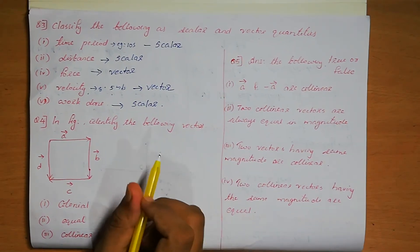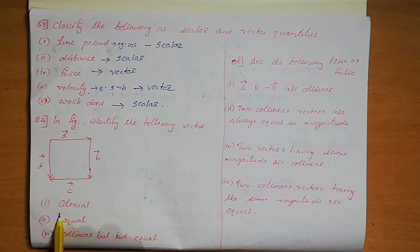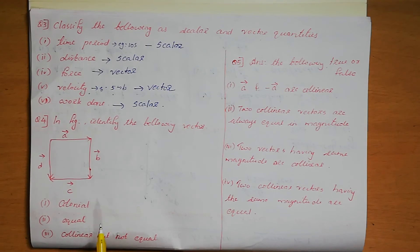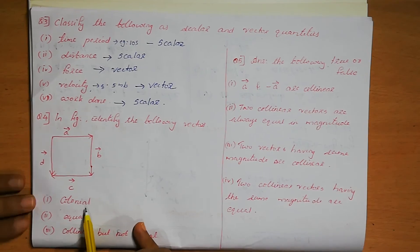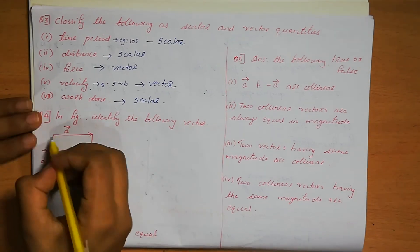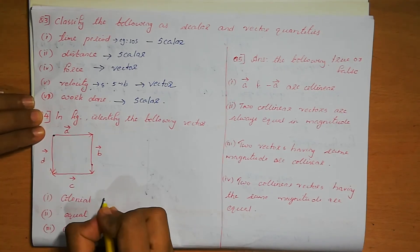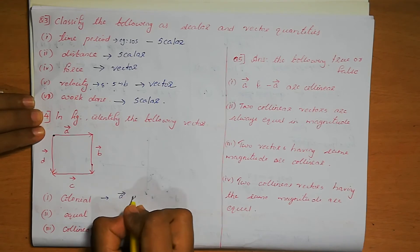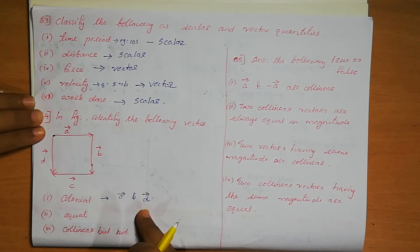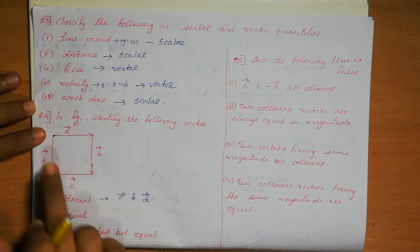Question number 4. In the figure, identify the following vectors. First, collinear — collinear means from the same initial point two vectors are coming. So which ones have the same initial point? Vector A and vector D both come from the same point. So vector A and vector D are collinear because they have the same initial point.